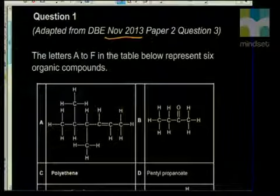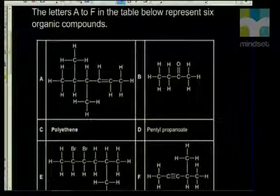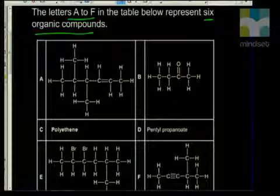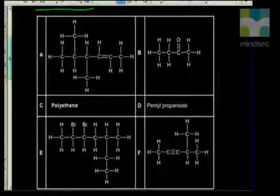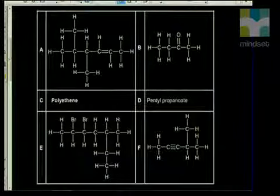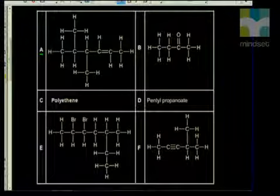They typically give you a diagram with structural formulae and some names. The table represents six organic compounds. Remember the basis of organic chemistry: organic chemicals are those that contain carbon. Carbon always has four bonds and has this amazing ability to form chains or rings. You need to be able to draw structural formulae and analyze them. We've got six organic molecules — molecule A has carbon and hydrogen.